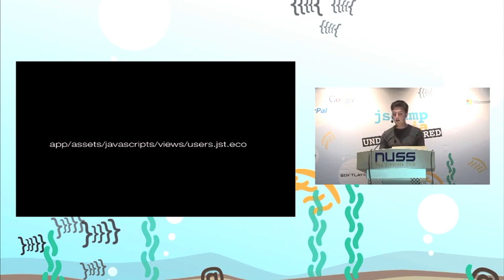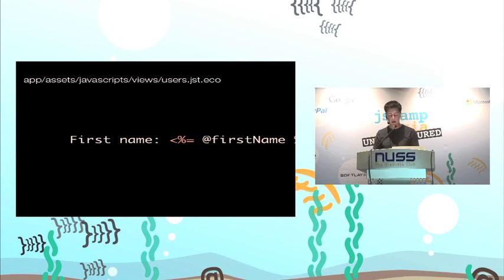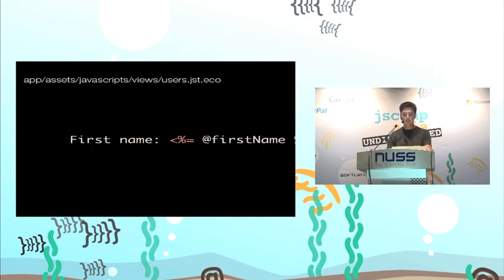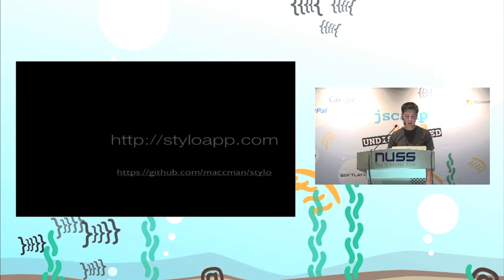If you're using Rails, Sprockets, or Sinatra, it's really simple — just put a .eco extension on a file and it'll be rendered as an Eco template. Eco's format looks a lot like HTML but it's actually CoffeeScript. You have angle brackets, and if there's an equals sign it'll output the variable to the page. You'll notice the JST at the top — if you put that in the filename, the template gets appended to this JST object in the page as a function. You call that function, pass in a context, it returns a string — it's that simple.